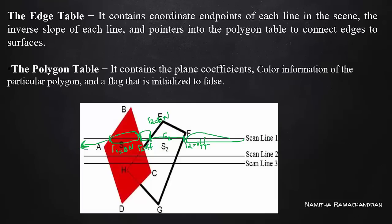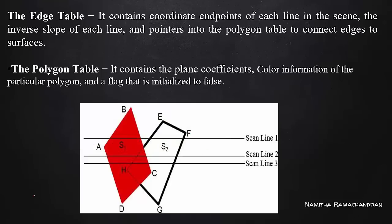Now, when more than one flag value is on at the same time, Scanline 1 is not simply 1. First, the background intensity covers up to the first point. Then in the next location, S1 is active. In the following region, again we have background intensity, then S2 intensity, and then background intensity again.